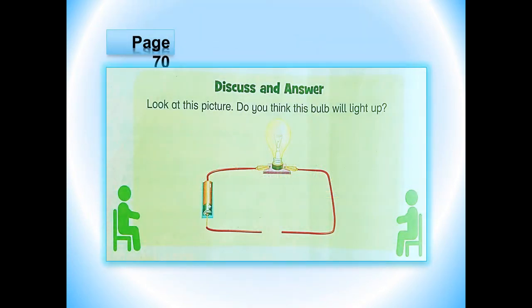Now, Grade 3, recall the lesson in your mind and look at this picture. Do you think this bulb will light up? As you can see, there is a gap in the circuit. So just think about it — will the bulb light up or not? If not, you can discuss your answer with your parents and siblings at home.